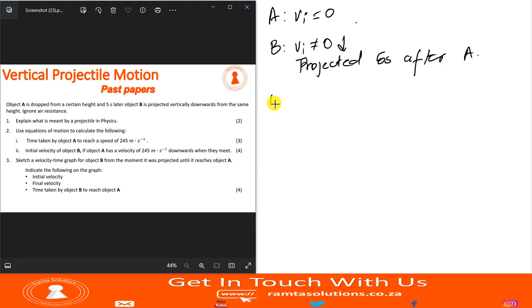Question one: Explain what is meant by projectile in physics. What is a projectile? We know that it's an object, but what kind of an object? It is an object moving under the influence of gravity only.